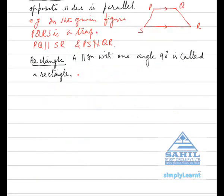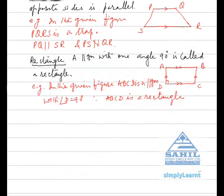Rectangle. A parallelogram with one angle equal to 90 degrees is called a rectangle. For example, in the given figure ABCD is a parallelogram with angle D equal to 90 degrees, therefore ABCD is a rectangle.